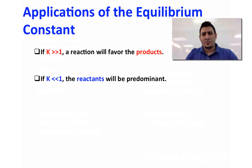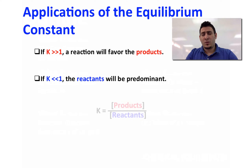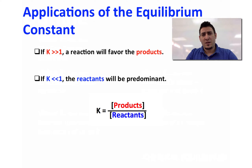If the equilibrium constant is greater than 1, this means that the reaction favors the product, since the equilibrium constant expression is equal to the concentration of products divided by the concentration of reactants.